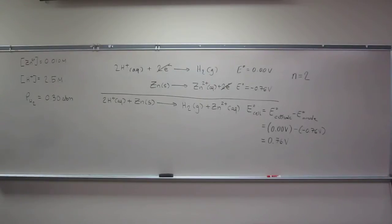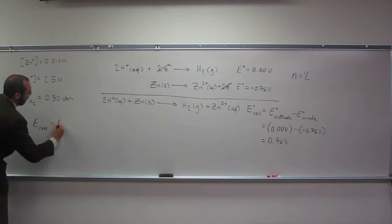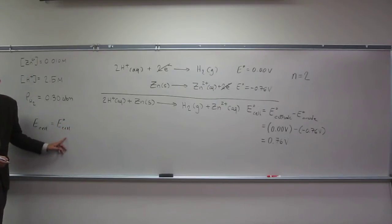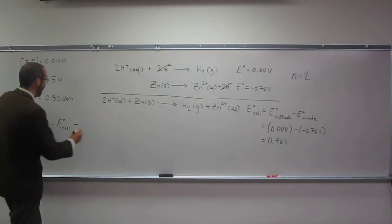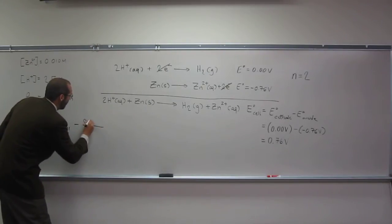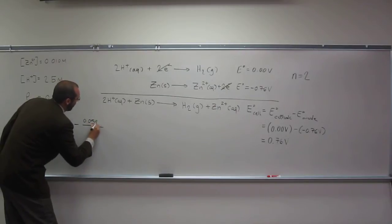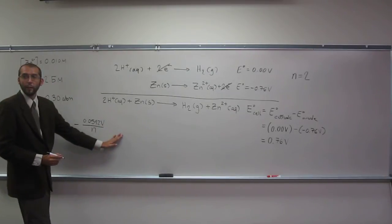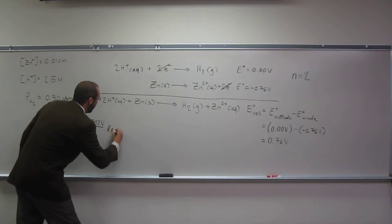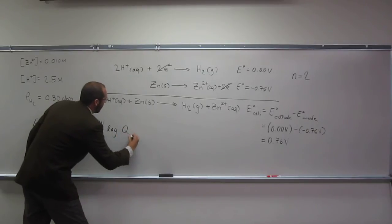Do you guys remember what the Nernst equation is? So E cell equals standard potential of the cell. So did we figure that out already? Yes. Okay, cool. So help me out. Minus 0.0592 volts over n, do we have n? Yes. Times what? Log of Q. So what are we missing? Q. Can we figure that out from our balanced equation here? Yes.